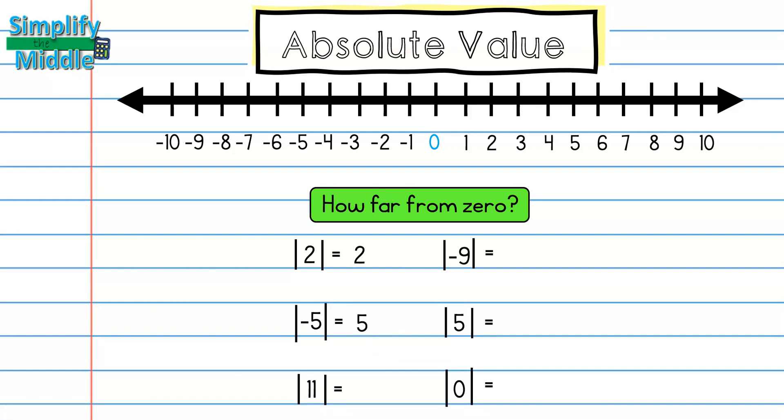For 11, I know that I'm following the same type of pattern, so I know that my absolute value here would be 11 as well, because I cannot have a negative as an answer for absolute value.